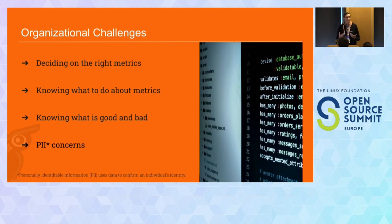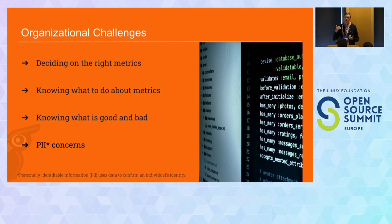From an organizational perspective, something to keep in mind is: what are the right metrics to look at? Because we are what we measure. Once we measure something, people start to game the system and adjust their behavior, so we want to be mindful of this. Figure out what the strategy and goals are, then work backwards to figure out what questions we need to answer to know whether we're reaching that goal, and then figure out the metrics that help us answer those questions.